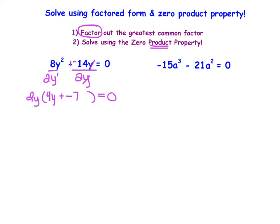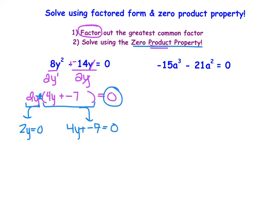I'm left with 2y times (4y + negative 7) equals 0. Because I have a product equal to 0, I can utilize the zero product property — setting each part equal to 0 and solving. Dividing by 2 gives y = 0. Or adding 7 gives 4y = 7, and dividing by 4 gives y = 7/4.